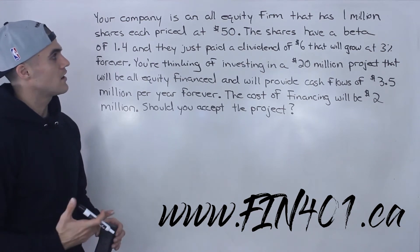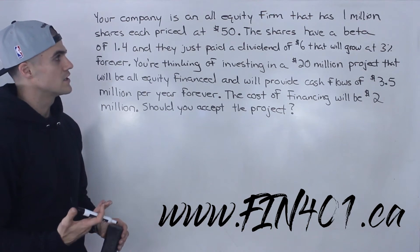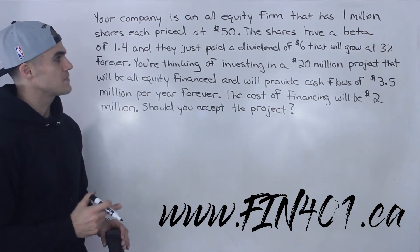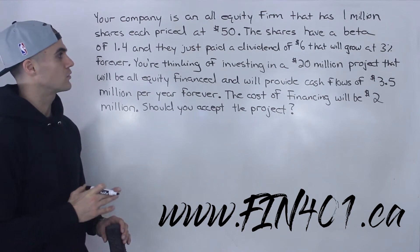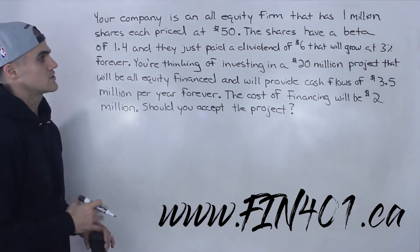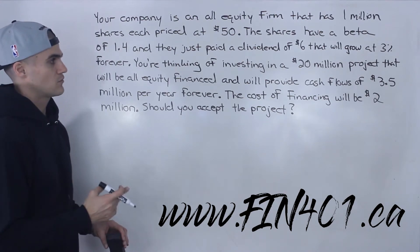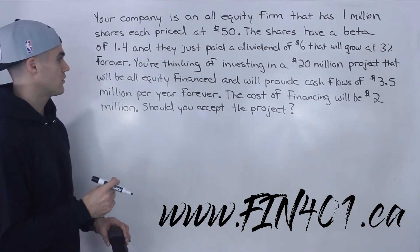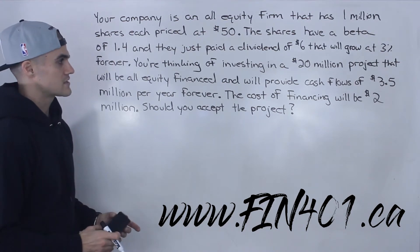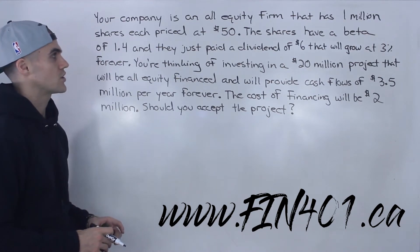Your company is an all-equity firm that has 1 million shares each priced at $50. The shares have a beta of 1.4 and they just paid a dividend of $6 that will grow at 3% forever. You're thinking of investing in a $20 million project that will be all-equity financed and will provide cash flows of $3.5 million per year forever. The cost of financing will be $2 million — should you accept the project?